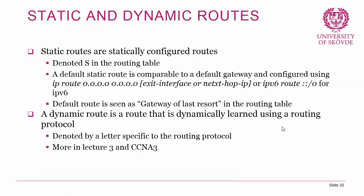Static routes are statically configured routes, denoted by S in the routing table. A default static route is comparable to a default gateway — a catch-all route configured with 'ip route 0.0.0.0 0.0.0.0' followed by an exit interface or next-hop IP for IPv4, or 'ipv6 route ::/0' for IPv6. The default route is noted as the gateway of last resort in the routing table. A dynamic route is learned via a routing protocol, denoted by a protocol-specific letter, and we'll cover this in detail in lecture 3 and CCNA 3.